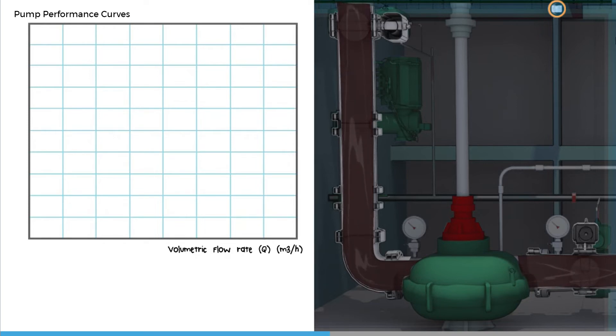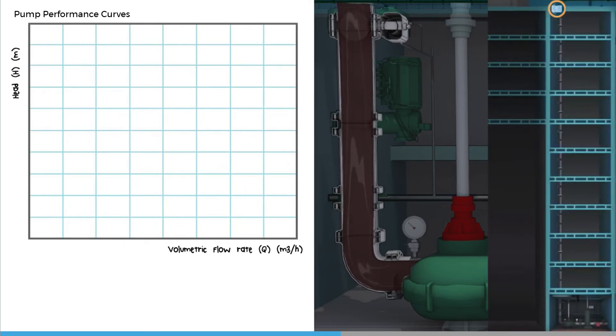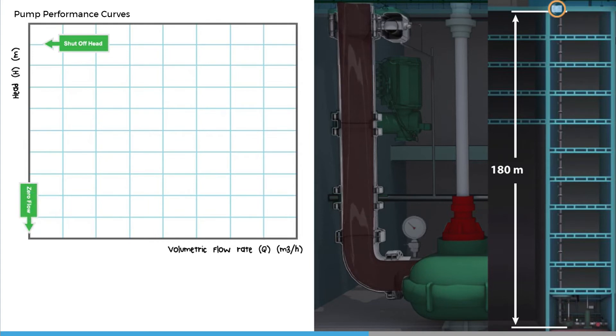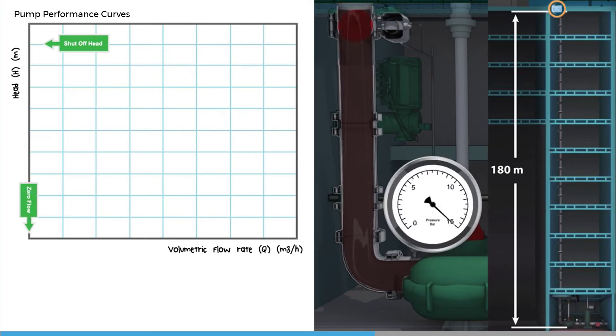The y-axis represents the head in meters. We give this the letter H. The maximum head that a pump can generate occurs when the flow is zero. We call this the shut-off head, and it is equivalent to what would be seen on the pump discharge pressure gauge if the valve was closed against the flow.